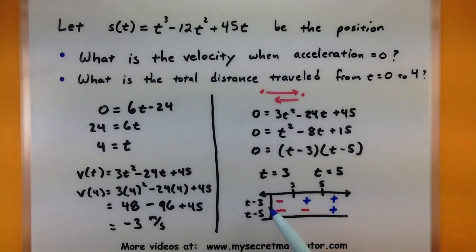So by looking at the signs of the individual pieces of the velocity, now I can put those together and see what my total velocity is doing. So from time 0 to time 3, it looks like my velocity is positive. From 3 to 5, I would have a positive times a negative, so my velocity is negative. And right there, I know that it just changed directions, because my velocity was positive then it switched to negative, so it must have turned around right there.